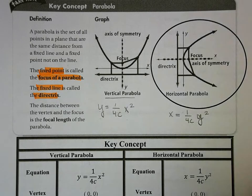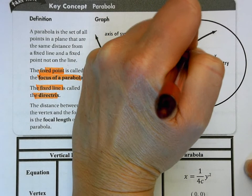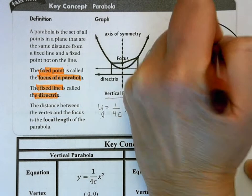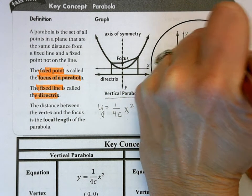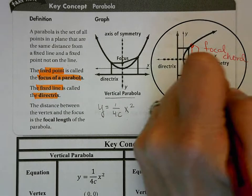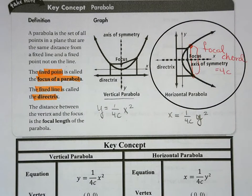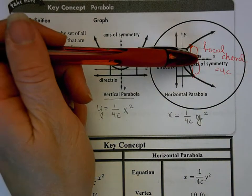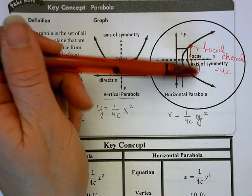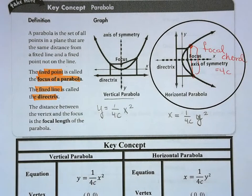If this is our focus, the distance from the focus to one endpoint of the focal chord is 2c, and to the other endpoint is 2c, for a total focal chord distance of 4c — which is our denominator in the equation.